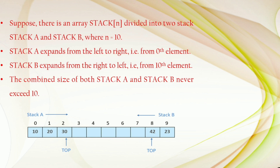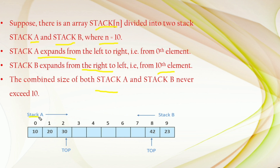Suppose there is an array of size n which is divided into two stacks: stack A and stack B, whose size is 10 (n = 10). Stack A expands from left to right starting from index 0, and stack B expands from right to left starting from the 10th element. The combined size of both stack A and stack B never exceeds n. After inserting three elements, the top element for stack A becomes 30 (at index 2) and the top element for stack B becomes 42 (at index 8).